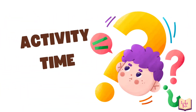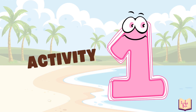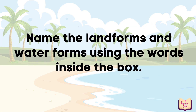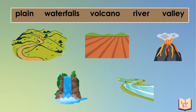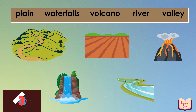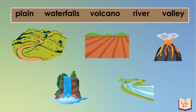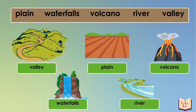Now it's activity time! Let us see if you learned something today. Activity 1: Name the landforms and water forms using the words inside the box — plain, waterfalls, volcano, river, and valley. We have 10 seconds to name the following pictures. Let us see if you are correct. The answers are: valley, plain, volcano, waterfalls, and river. Are your answers correct? If yes, you are very good!